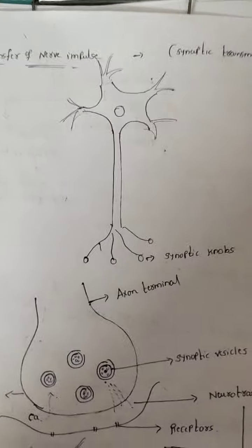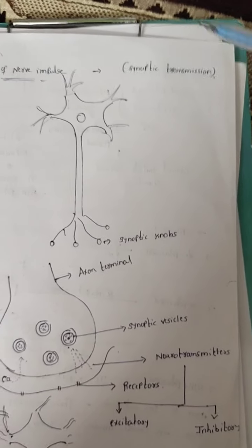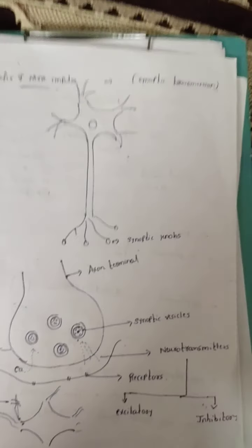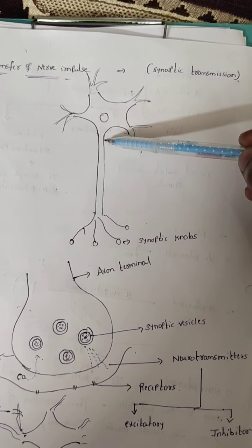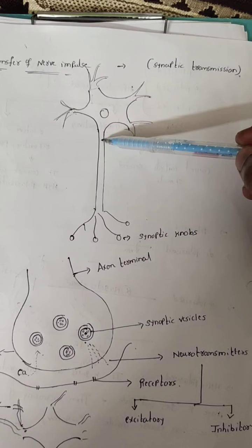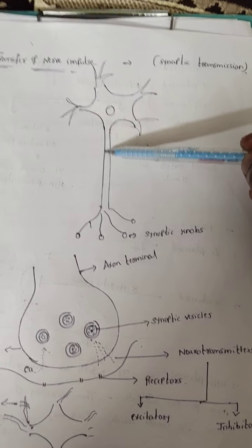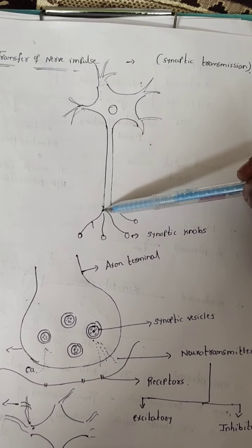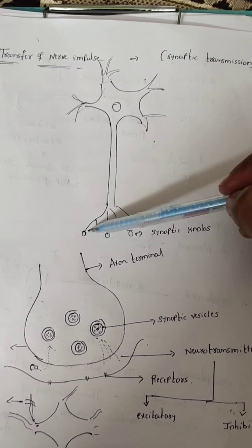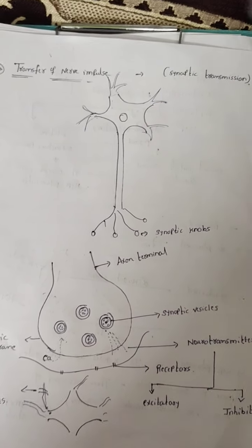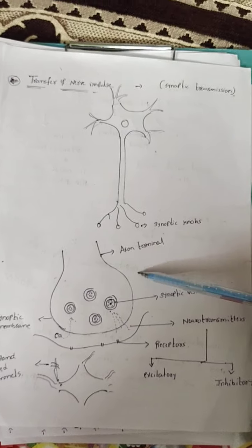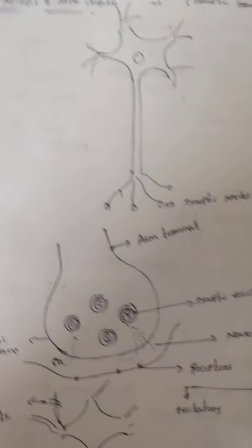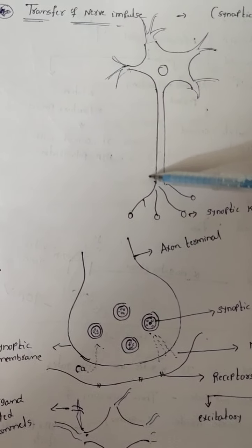Now, how is impulse formation transferred? When external stimuli are applied to a region, a concentration gradient starts and the electrical nerve impulse travels from axon to axon terminals, then to synaptic nodes. The impulse is transferred from one neuron to another neuron continuously. When the impulse reaches the synaptic node, this is where transmission between neurons occurs.